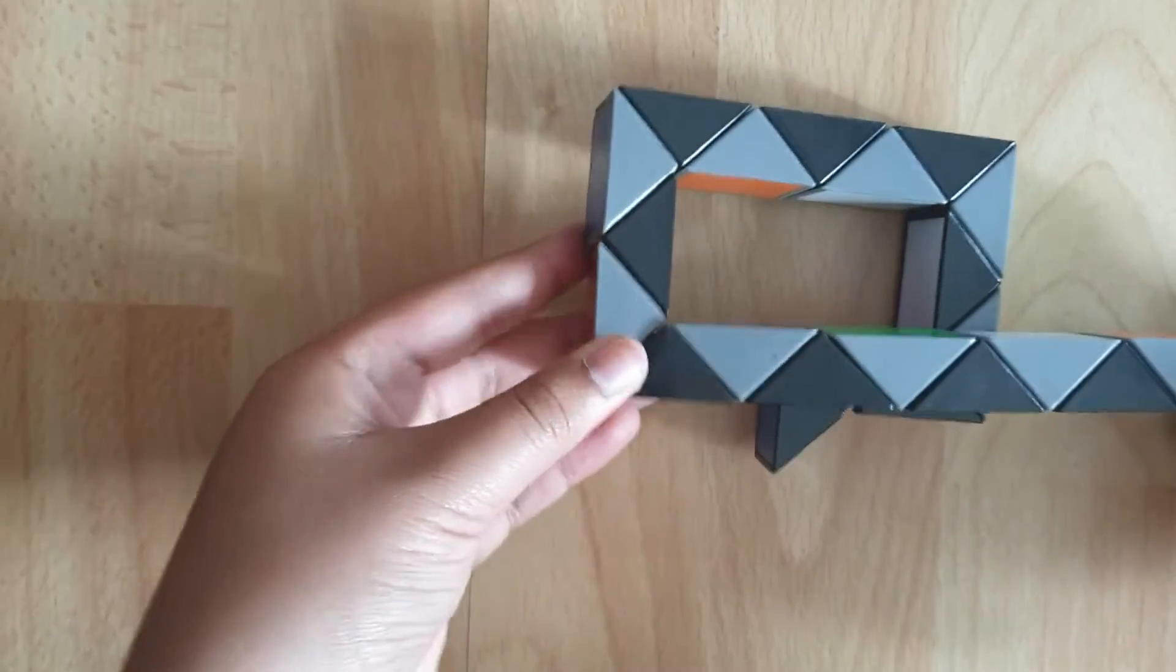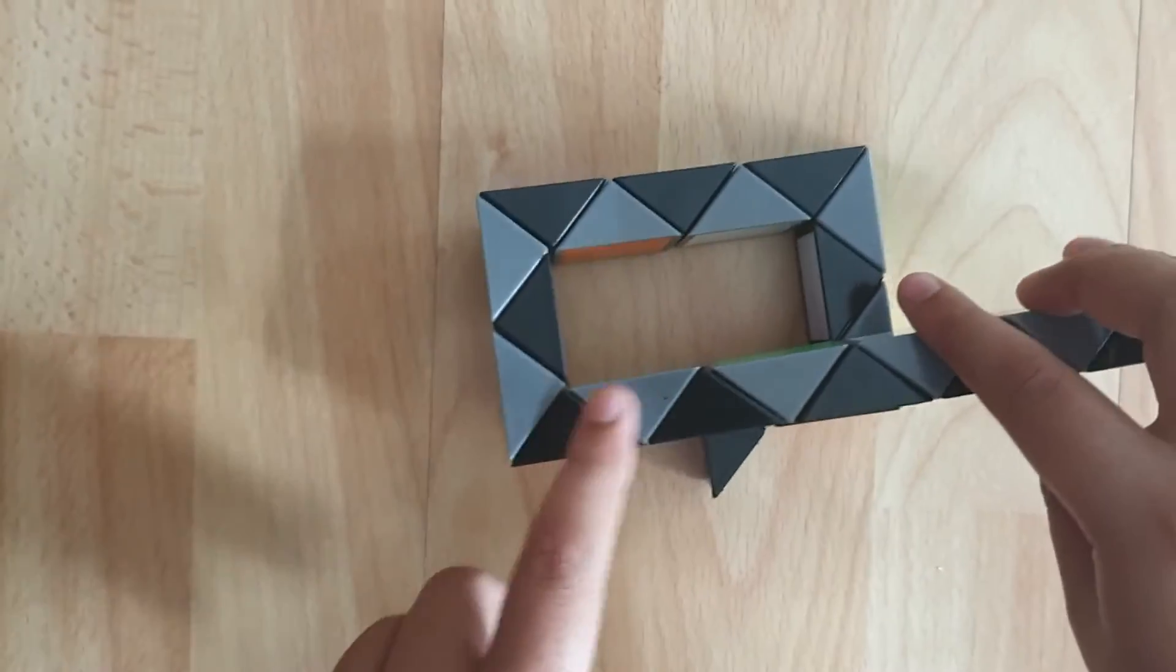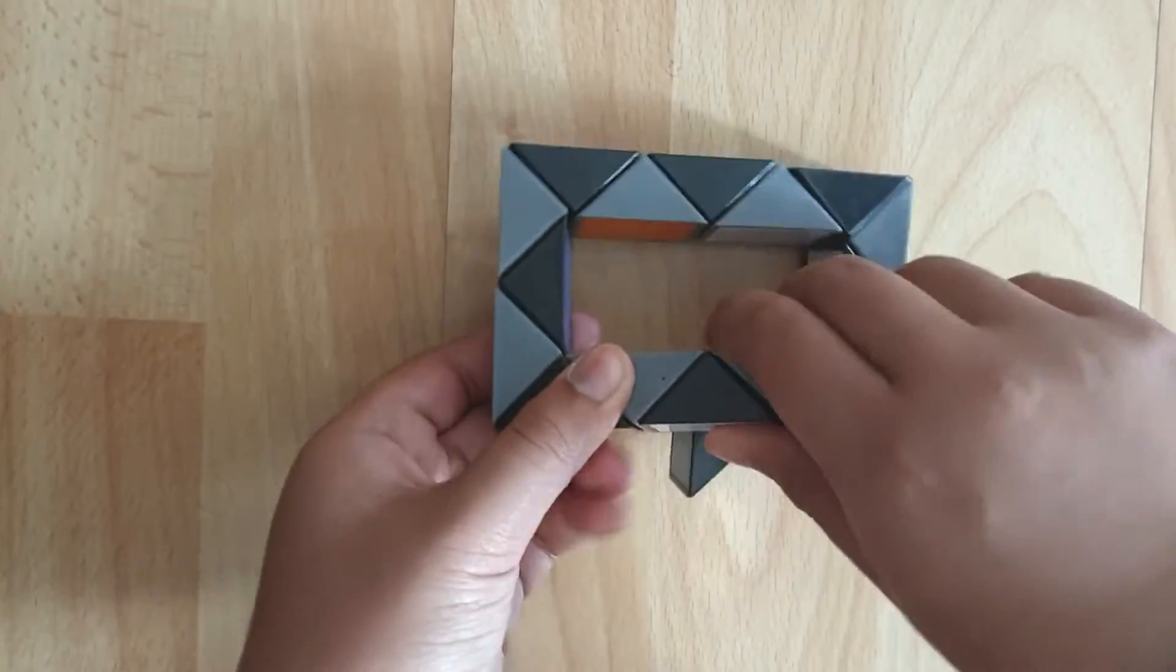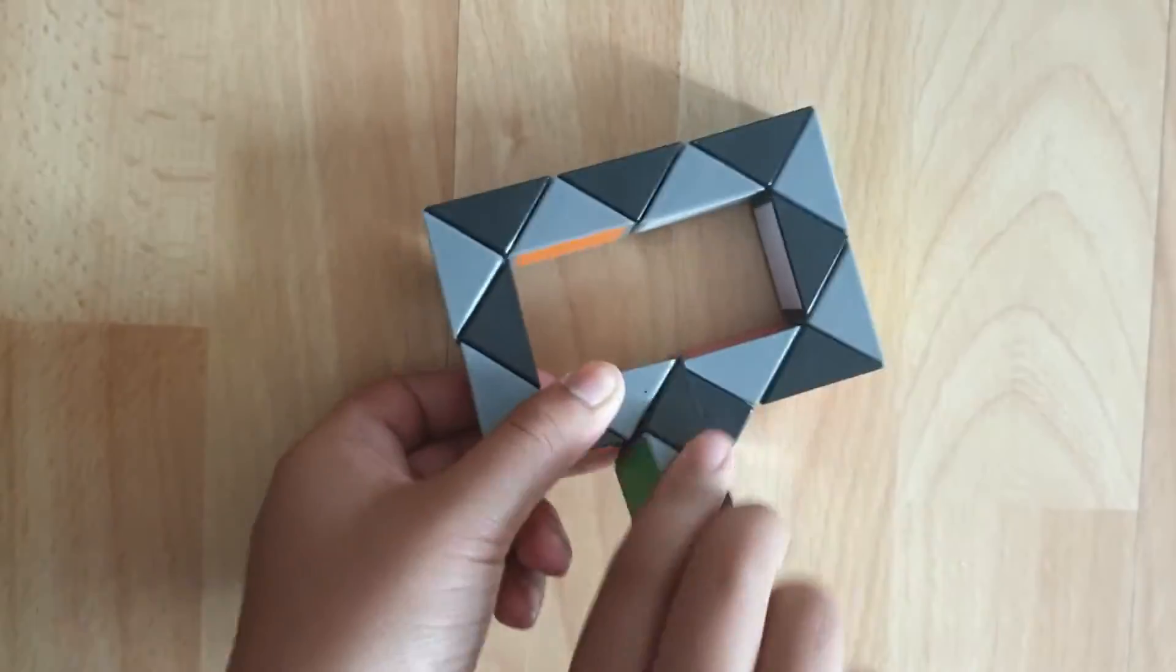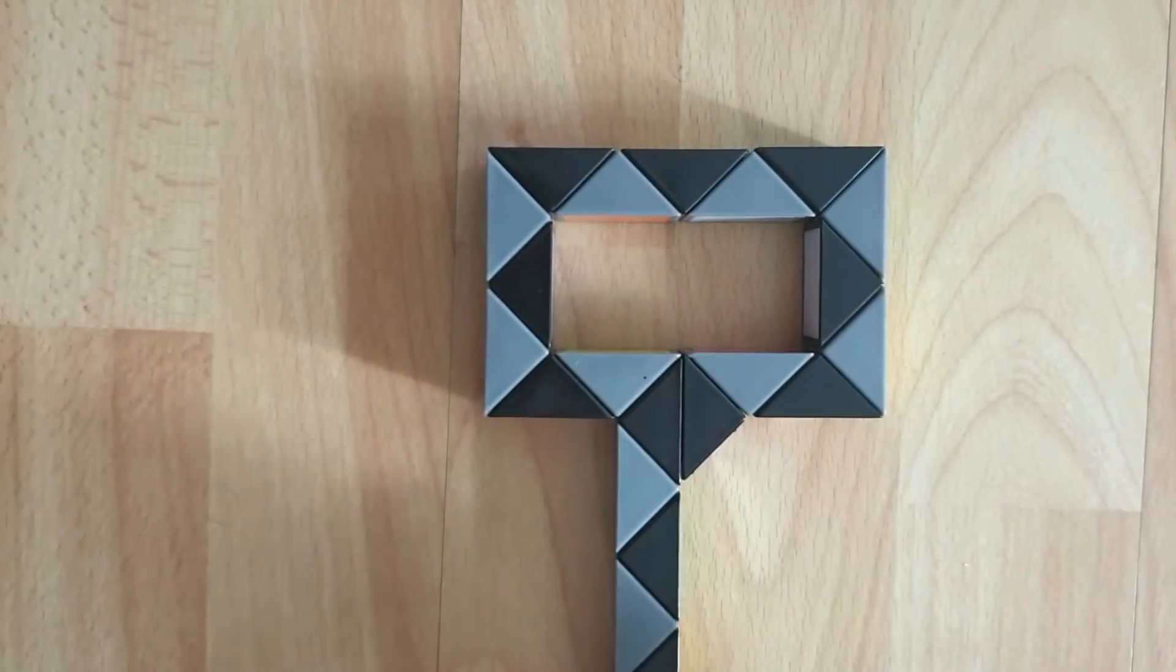And then you'll get this overlap but just ignore it because we're about to fix it. So count one, two, and then turn everything, so hold those two and turn everything else two times. So once and then twice. And then you'll notice the overlap will automatically be fixed.